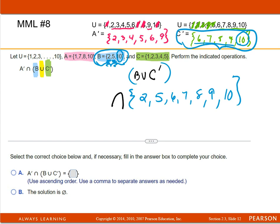And we want to intersect that with A prime. And A prime, I'm just gonna write it down, was the set of 2, 3, 4, 5, 6, and 9.